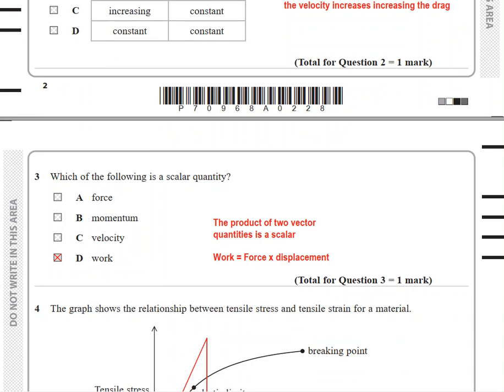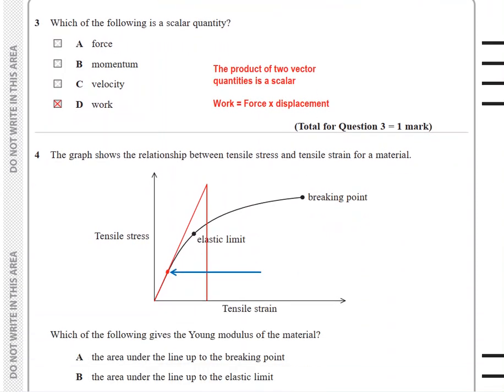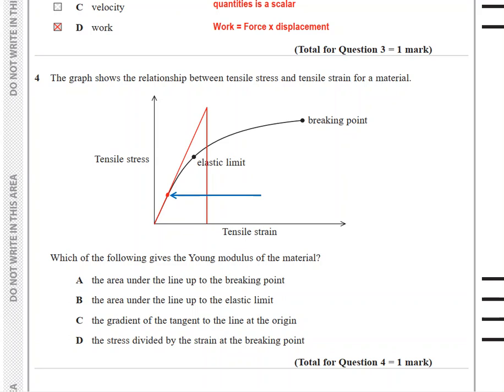For question 4, the graph shows the relationship between tensile stress and tensile strain for a material. Which of the following gives the Young modulus of the material? The graph is a straight line up to this point. The stress divided by strain at this point is equal to the gradient, but this will only give a very small triangle. That's why you have to draw a tangent here. Answer is C: the gradient of the tangent to the line at the origin.